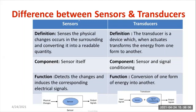As you can observe, there is a table where I have bifurcated the points related to sensors and transducers. Let us discuss about the sensor. As per the definition, a sensor senses the physical changes occurring in the surrounding and converts them into a readable quantity. For example, thermometer, barometer, etc.